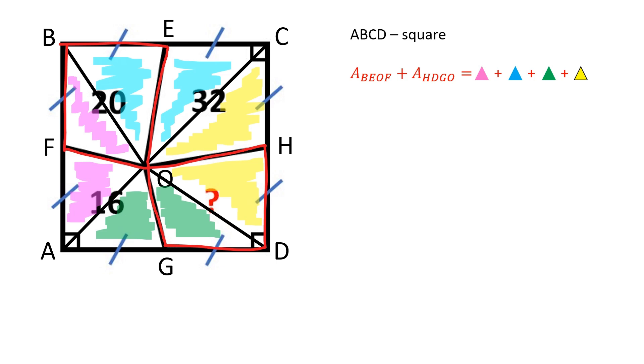The area of BEOF plus the area of HDGO is equal to the sum of one pink triangle, one blue triangle, one green triangle, and one yellow triangle.